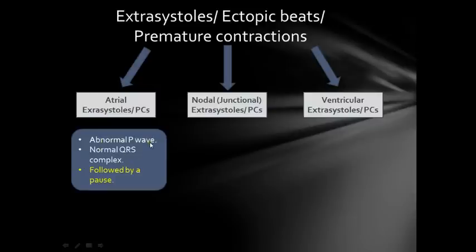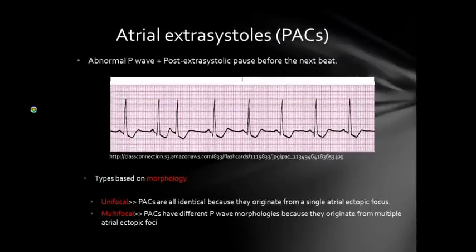Atrial extrasystoles are characterized by the following on an ECG: an abnormal P wave — abnormal because the P wave represents atrial depolarization, so if the atria are giving abnormal beats the P wave will be abnormal. The QRS is normal because the ventricles are normal. And it's followed by a pause. Looking at this ECG strip, the rhythm is irregular. You can see an abnormal P wave followed by a pause, with a normal QRS. This is called atrial premature contraction.